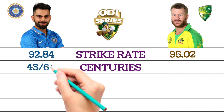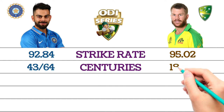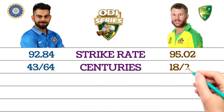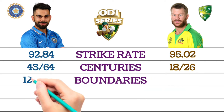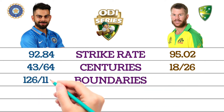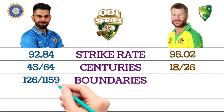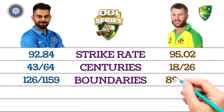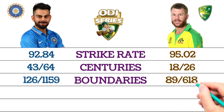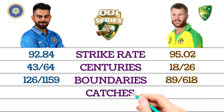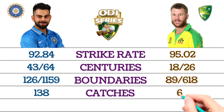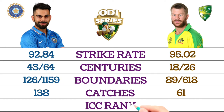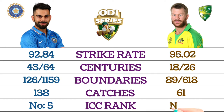David Warner 18 centuries and 26 half-centuries. ODI boundaries: Virat Kohli 126 sixes and 1,159 fours, David Warner 89 sixes and 618 fours. Catches: Virat Kohli 138, David Warner 61. ODI ICC rank: Virat Kohli number 5, David Warner number 6.